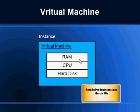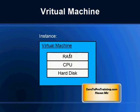The virtual machine will have resources attached to it — for example, memory (RAM), CPU, and hard disk — so it will have everything that you need to do the work, just like how you have all these resources in your physical machine.